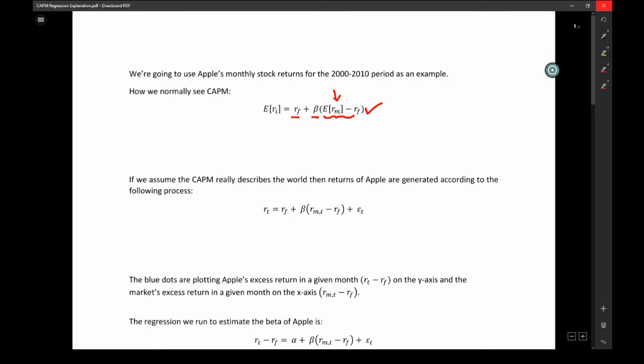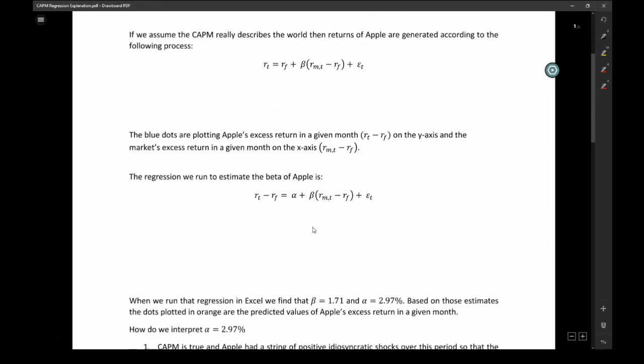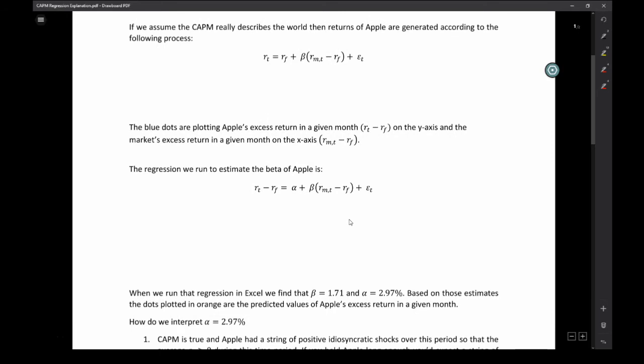That's the CAPM that we normally see in textbooks. But we don't actually estimate this when we are estimating beta. What we estimate when we estimate beta is based off this formula down here. When we estimate beta, we're saying the return at time T, so in a particular month, let's just say the return in January of 2000 is equal to the risk-free rate plus beta times the return of the market in that particular month in excess of the risk-free rate, plus epsilon T.